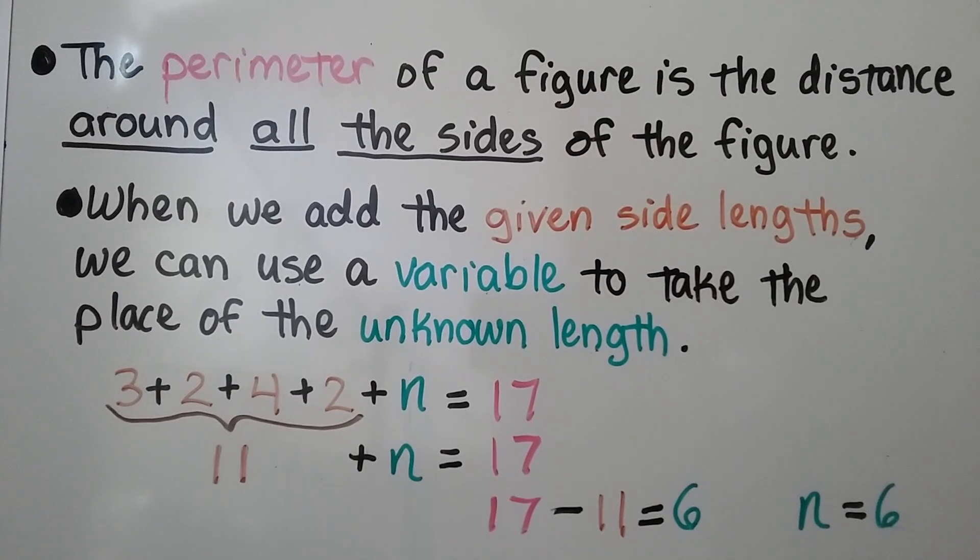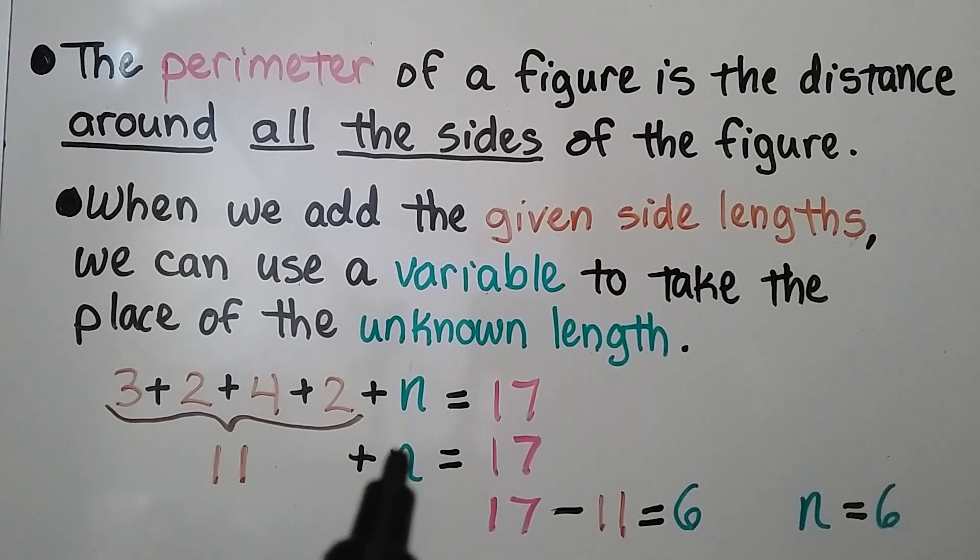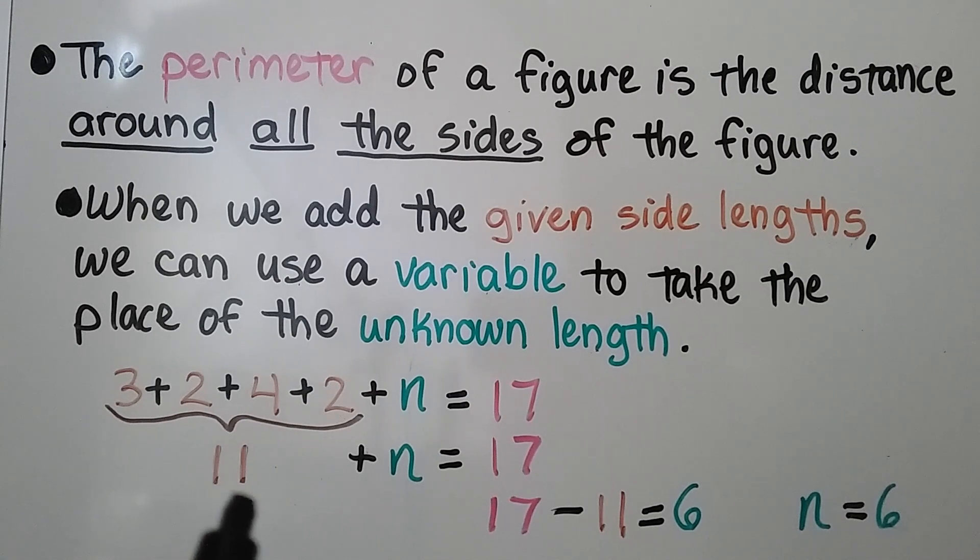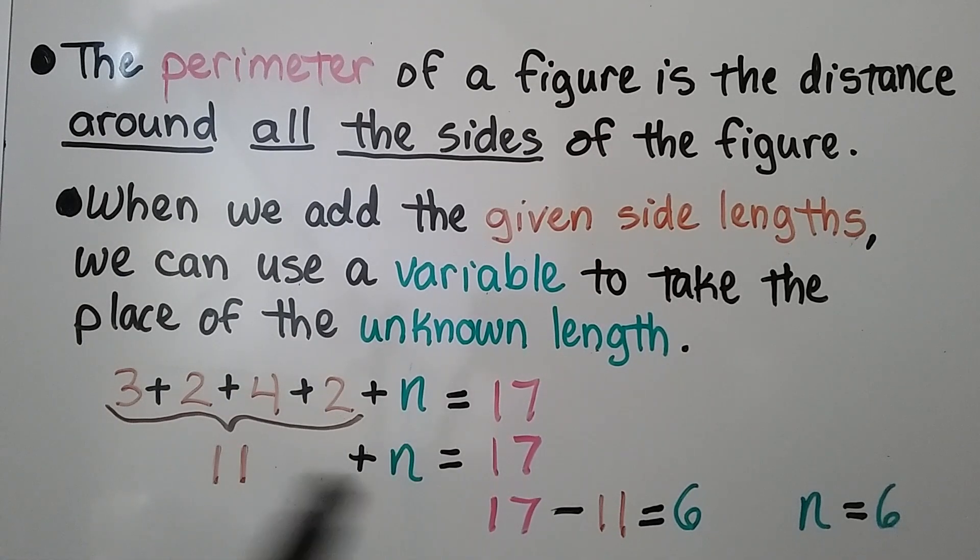The perimeter of a figure is its distance around all the sides of the figure. When we add the given side lengths, we can use a variable to take the place of the unknown length. So we can write 3 plus 2 plus 4 plus 2 plus n for the unknown length equals 17, that perimeter they gave us. We add these up and get a sum of 11 plus n equals 17. We take the 17 and subtract that sum, the 11, from it and it equals 6, so we know n equals 6. By using the variable to take the place of the unknown length, we're doing algebra.